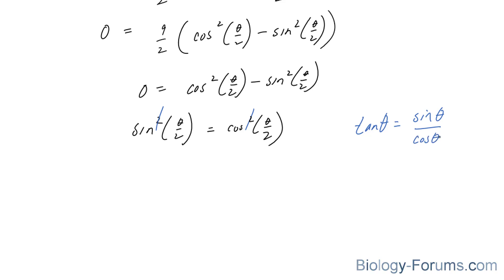Also recall that tangent theta is equal to sine over cosine. So if I divide both sides by cosine at this point, I end up with sine theta over two over cosine theta over two, which leads me to tangent theta over two is equal to one.